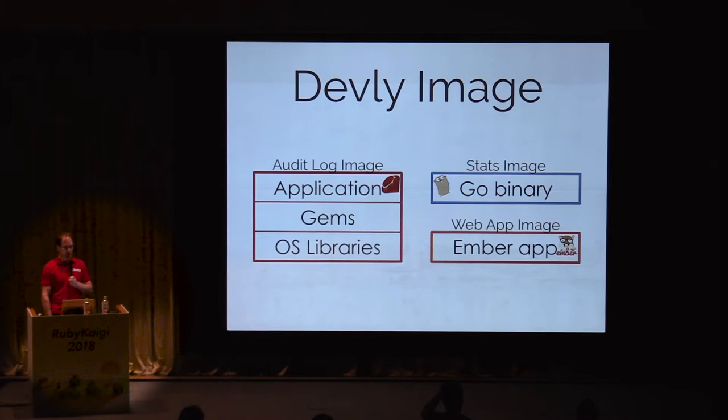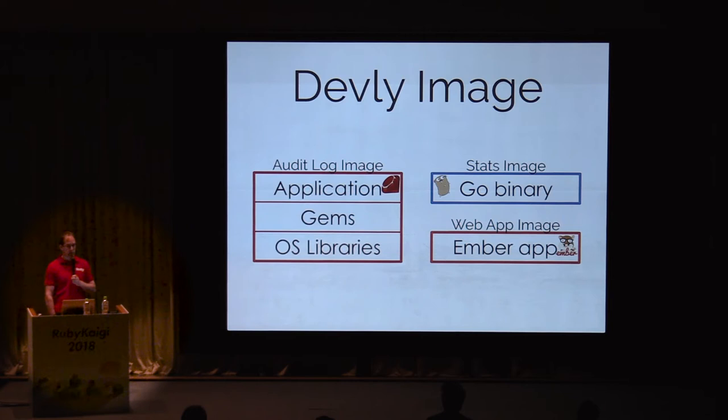Images can contain applications for any language. Our stats service is written in Go. Its image has a Go binary compiled from the stats application code. The web app our customers use is written in Ember, and this image contains a copy of the application code ready to run. We share all these images across teams by uploading and downloading them from Google Container Registry, which allows us to be sure we're always using the images built from the latest source code.